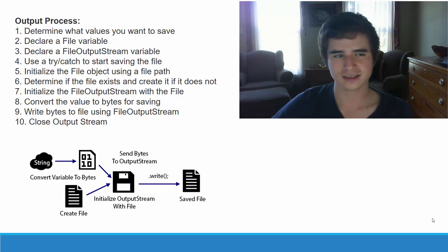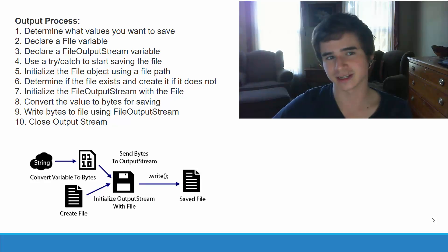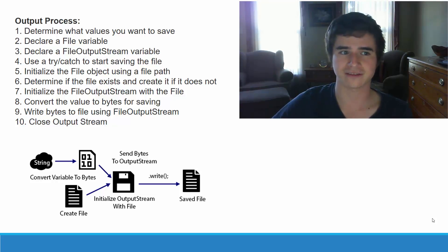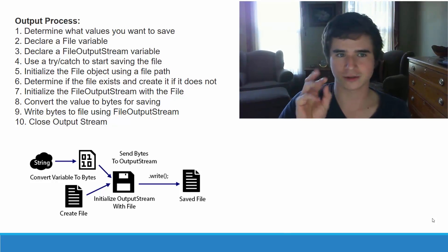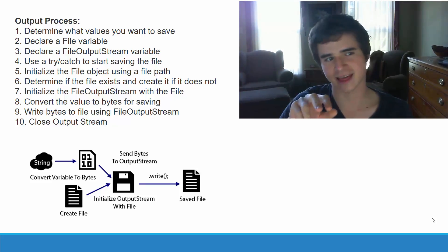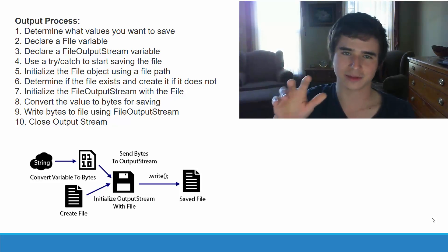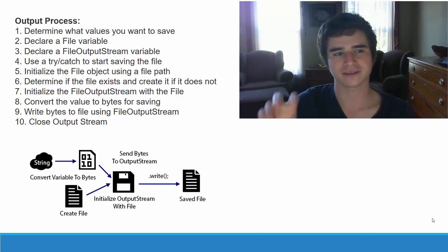The output process is as follows. First, we are going to determine what we want to save — for example, a string. Then we are going to declare a file object variable. We have this file object, which we will use to create and manipulate the file. It's going to store the file's location. Then we also have a file output stream, which will be used to write to the file. And then we're going to have a try-catch block.